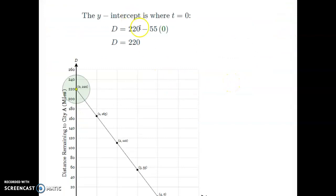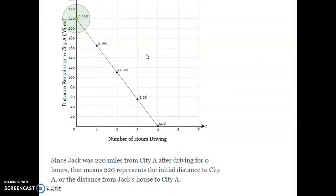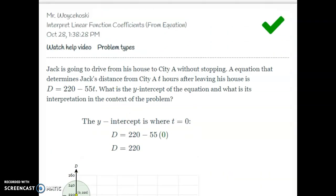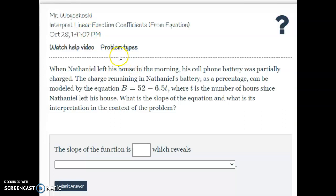And then it explains a little bit about it. So if you get it wrong you can always look at it, but here's the graph of it. It started at 220 and it was going down 55 every hour. It looks like it took four hours to get home. But that's what we're going to be doing, is we're going to be looking at problems like this one here. It's going to give us an equation, and it's either going to ask us what the slope is or what the y-intercept is.